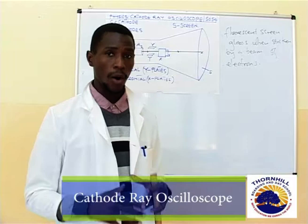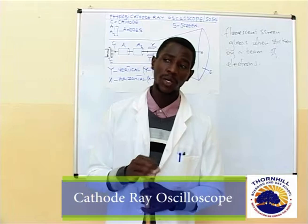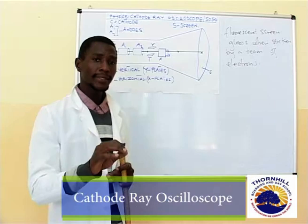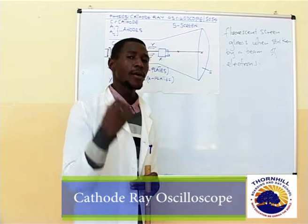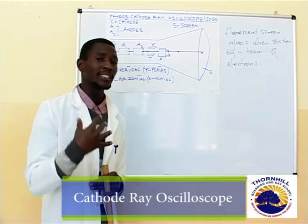So we discussed that in our next lesson we are going to look at a cathode ray oscilloscope. The rays that are usually emitted when we heat a metal at high temperatures produce a beam of electrons which we call cathode rays.